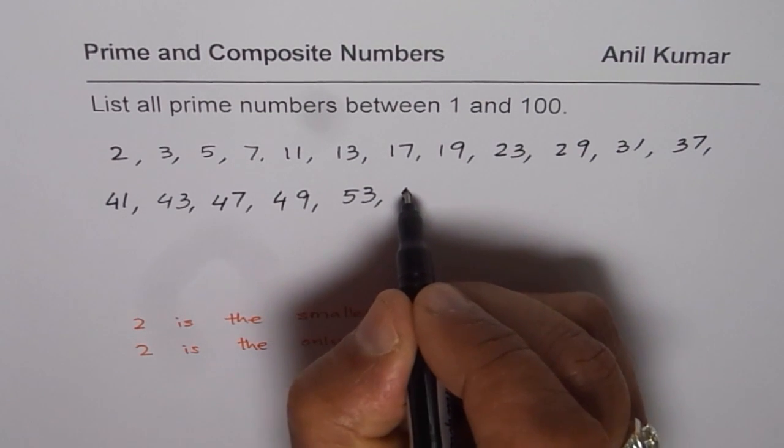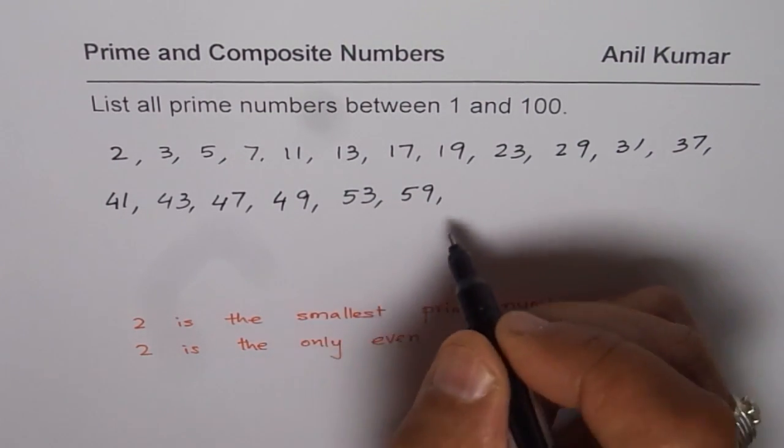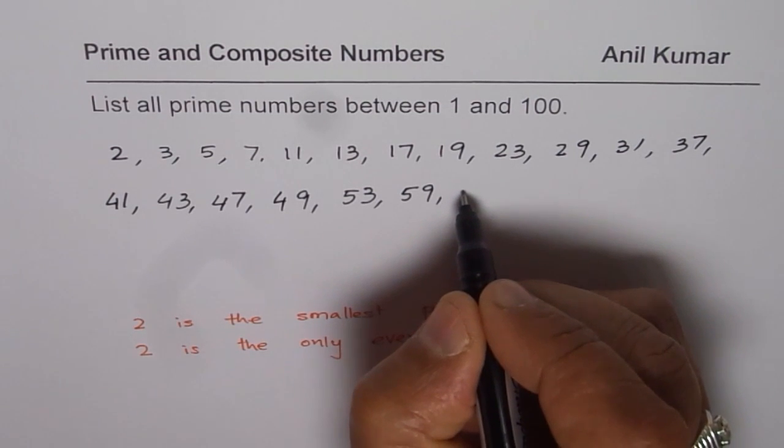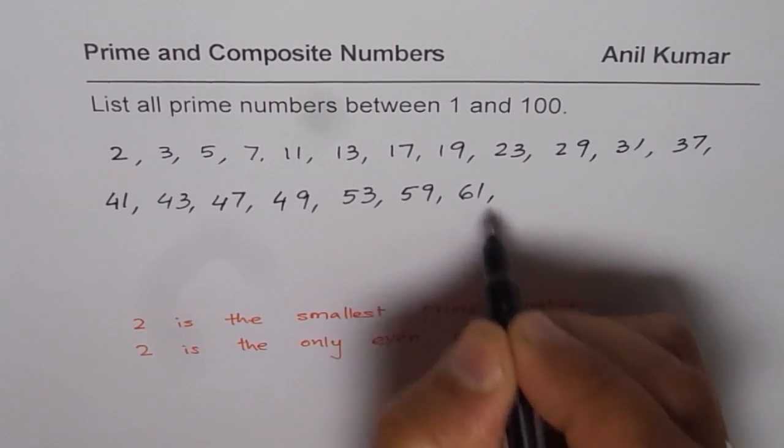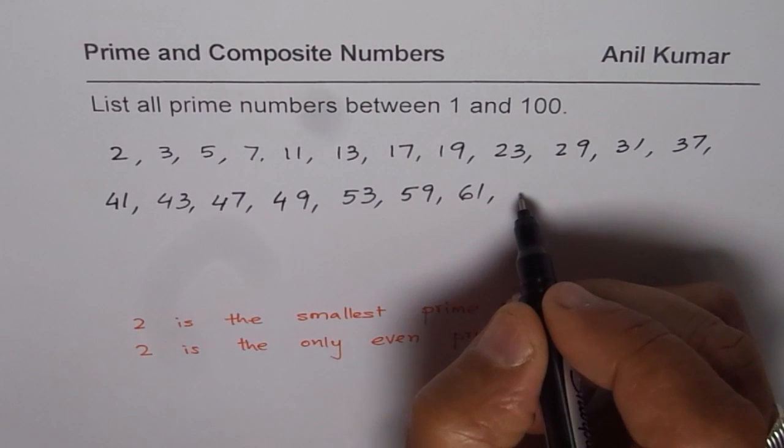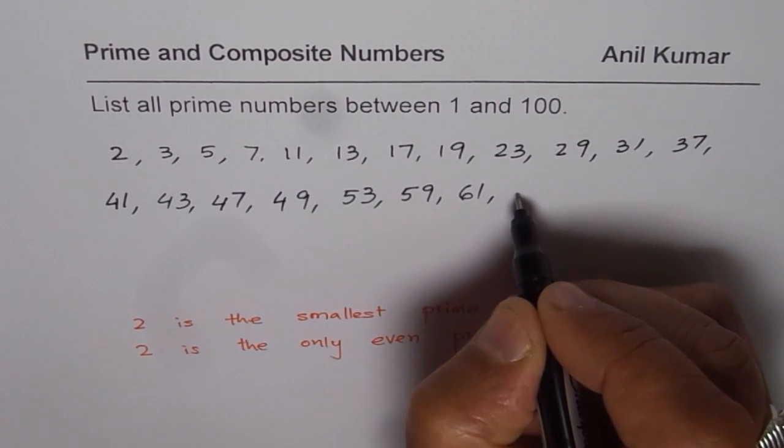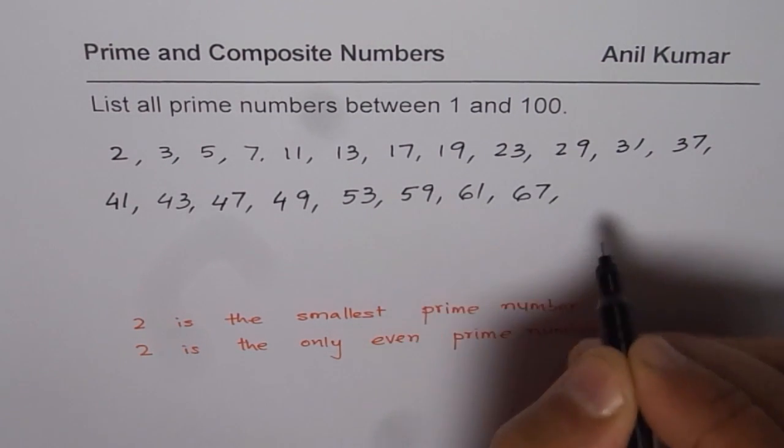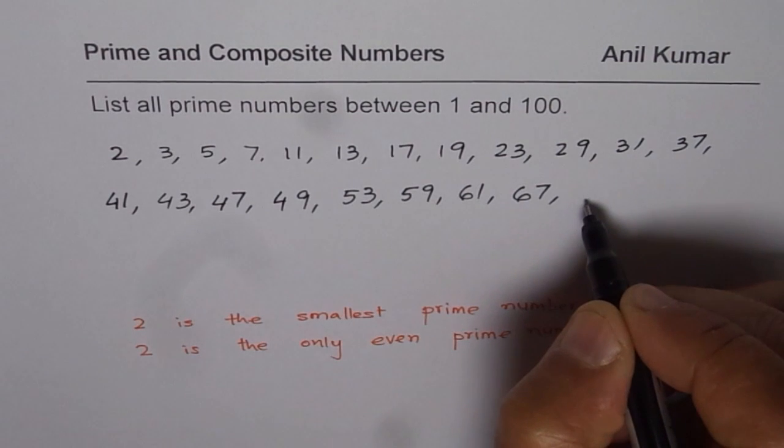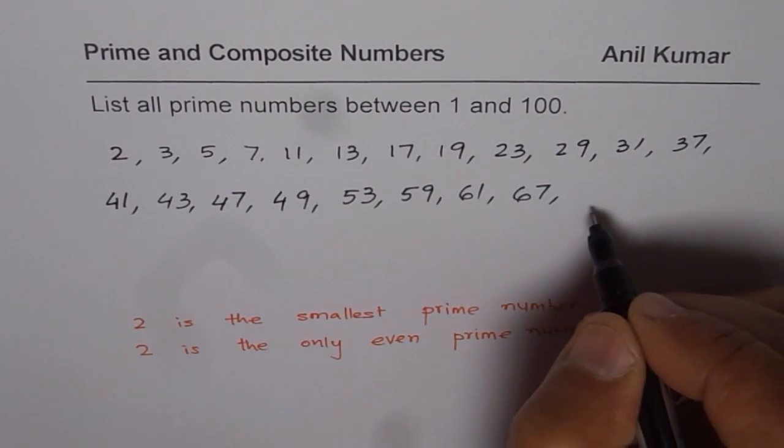Let me write down 61. 62 is even. 63 can be divided by 3. 64 is even. 65 can be divided by 5. 66 is even. 67, let me write down here.